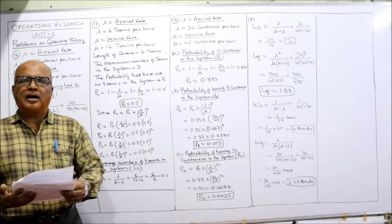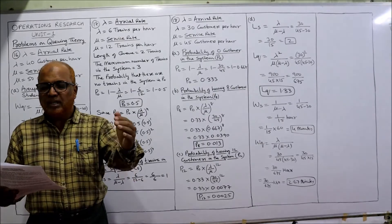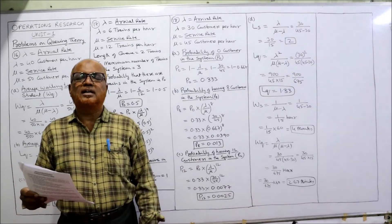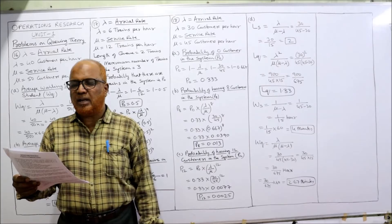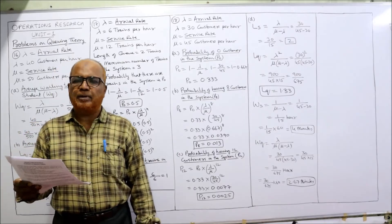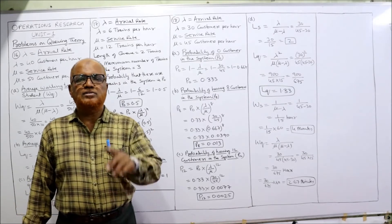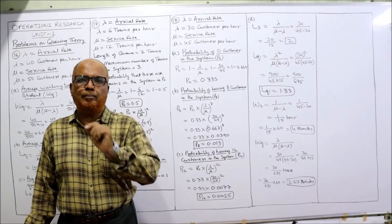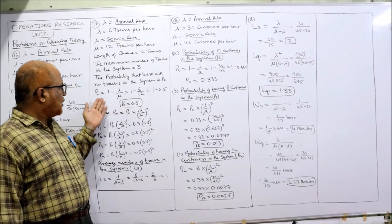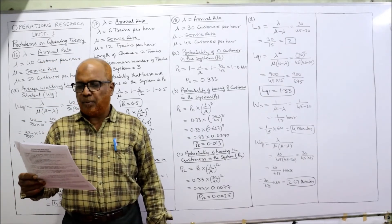Problem 18: The arrival rate of customers at a banking counter follows a Poisson distribution with a mean rate of 30 per hour, so λ = 30. The service rate of the counter clerk follows an exponential distribution with a mean of 45 per hour, so μ = 45 per hour. Questions: What is the probability of having 0 customers — P(0)? What is the probability of having 8 customers — P(8)?